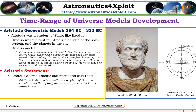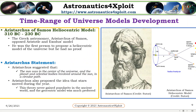Aristotelian uttered Exodus' statement and stated that all the celestial bodies with an accession of heart were circular and that if they were circular, they could orbit heart forever. The great astronomer Aristotelian of Samuels opposed Aristotelian and Exodus' model. He was the first person to produce a heliocentric model of the universe, but he had no proof.